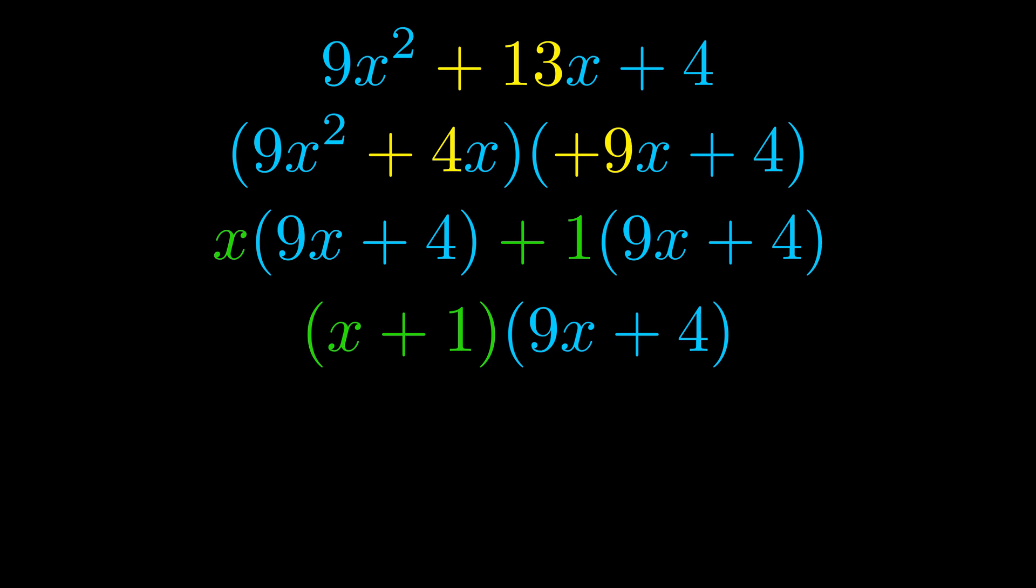Those blue values will become one of our factors and we will combine the two green values, the GCFs that we pulled out, to get the other one. And that is our fully factored equation.